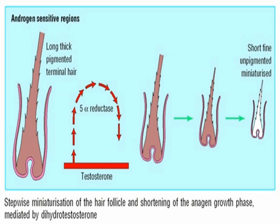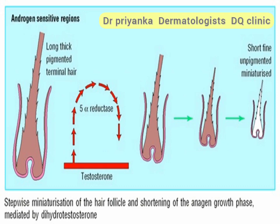There are many causes for miniaturization, the main one being the hormone testosterone, which is present predominantly in males. Testosterone is converted by the enzyme 5-alpha reductase into dihydrotestosterone, which has ill effects over selected hairs. In males, this results in frontotemporal hair loss, as that part of the hair is more sensitive to this hormone. The same hair follicles present in the beard region are stimulated by testosterone, which is why we say testosterone has varied effects in different parts of the body.